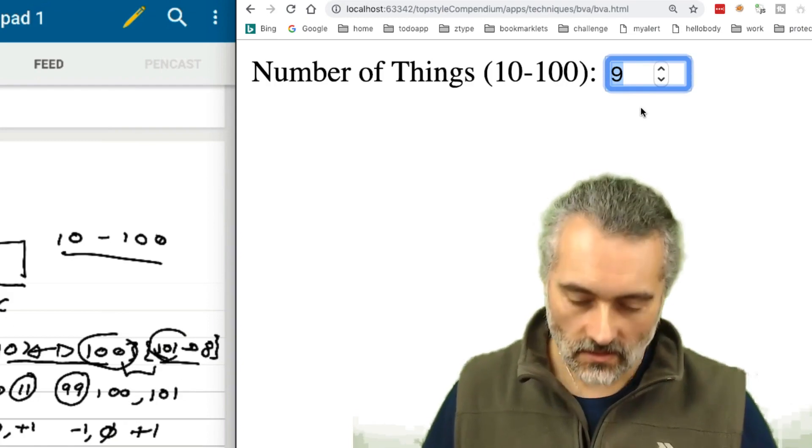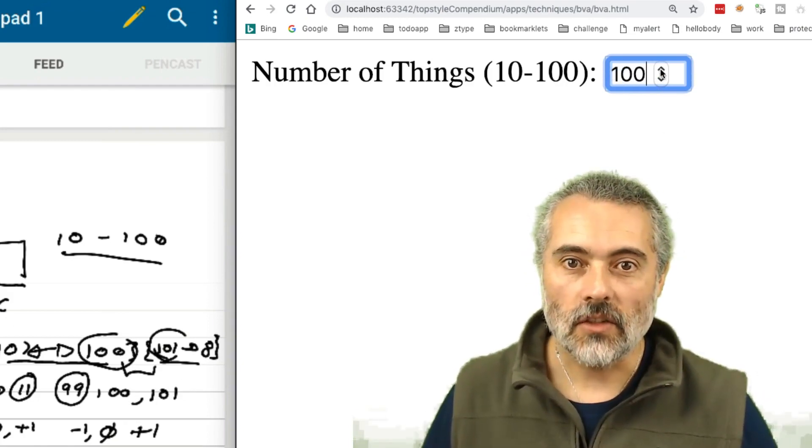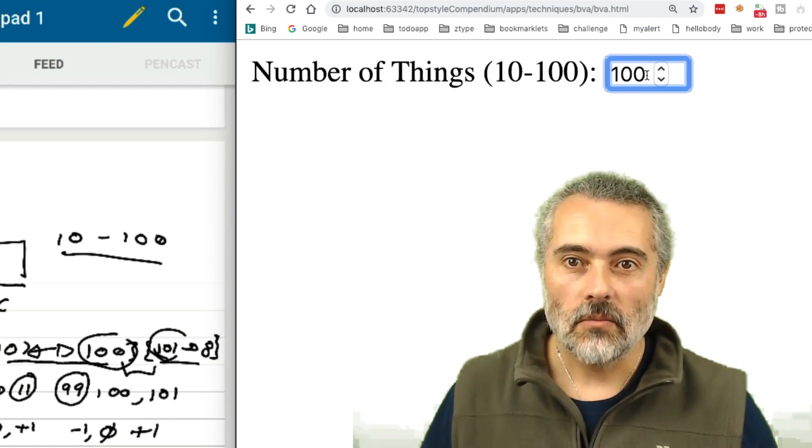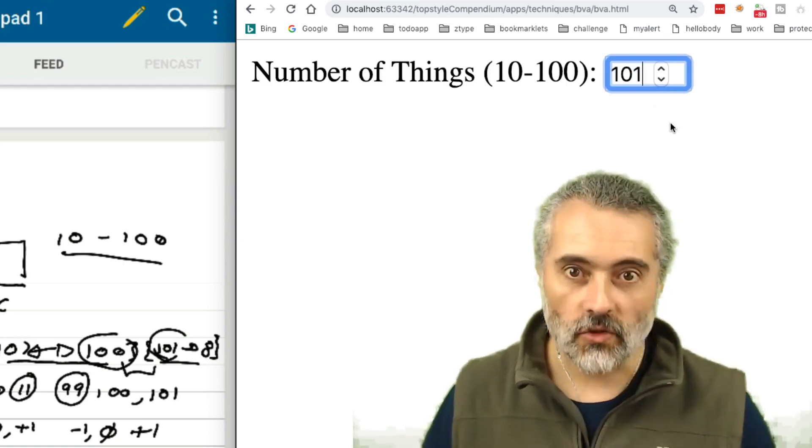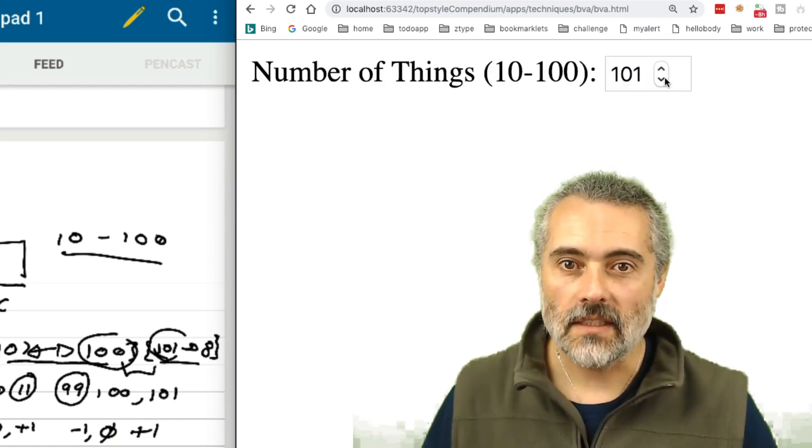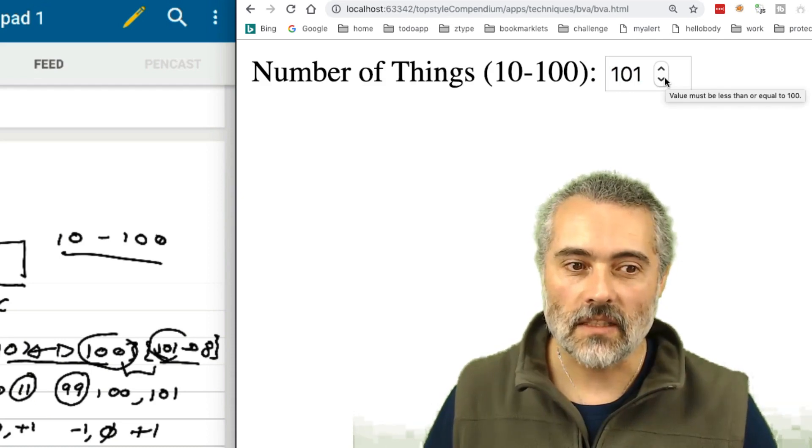Here, if I put in 99, go up to 100. I can't go further, but I can put in 101. And it says value must be less than or equal.